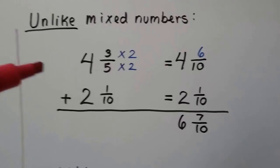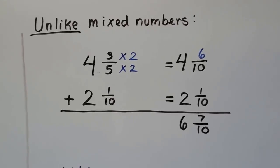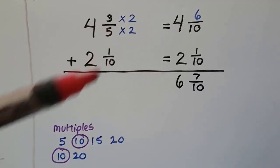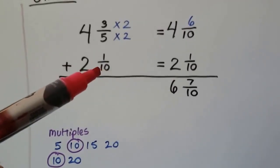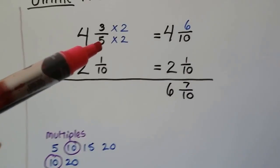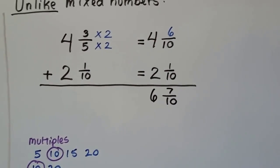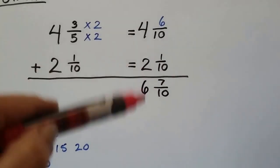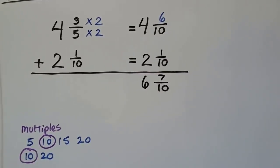Now when we have unlike mixed numbers — say adding 4 and 3 fifths to 2 and 1 tenth — we need to give them the same denominator. We make a list of multiples for the denominators, 5 and 10, and see they can meet at 10. The 2 and 1 tenth doesn't have to change. The 3 fifths needs the 5 multiplied by 2 to become 10, so the numerator also gets multiplied by 2, giving us 6 tenths. Now 6 tenths plus 1 tenth is 7 tenths, and we add the whole numbers to get 6.